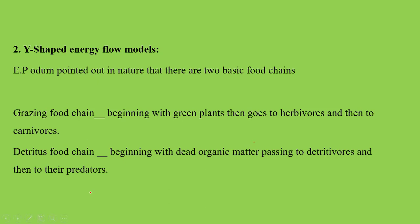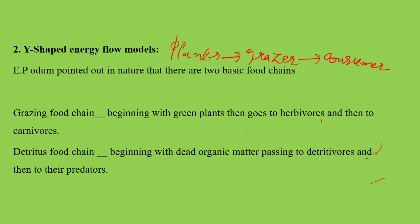As per the single channel energy flow model, only the grazing food chain was covered. In that model, plants trap solar radiation, then pass energy to the grazer, and then to the next consumer — this is how energy was flowing through a single channel, through one food chain in any particular ecosystem.